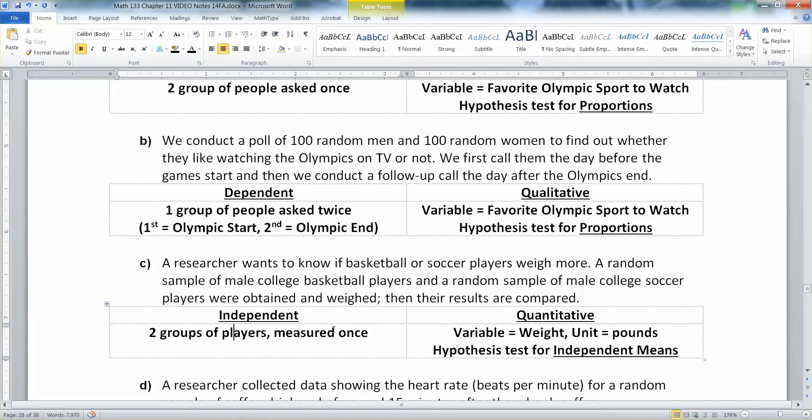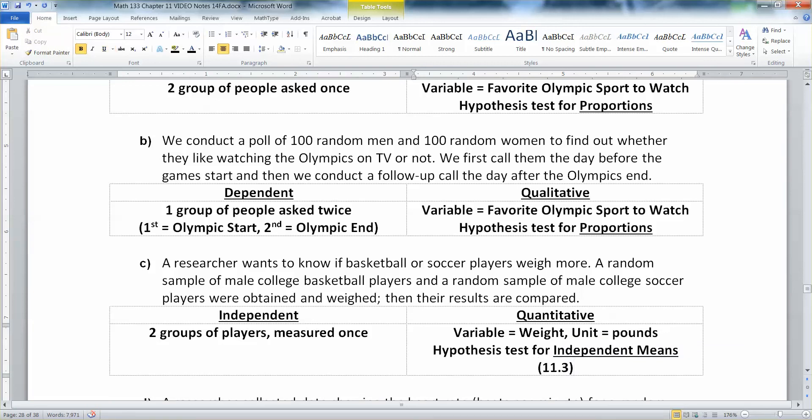Now, this is two groups of players, and you measure them one time. Put all the soccer players on a scale, measure them. All the basketball players on a scale, measure them. You're done. And you're just going to compare the two of them. That's a hypothesis test for independent means. That's section 11.3.